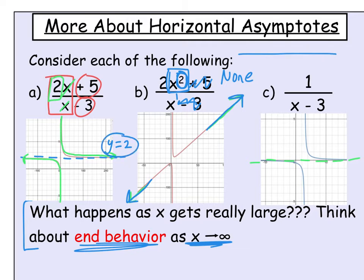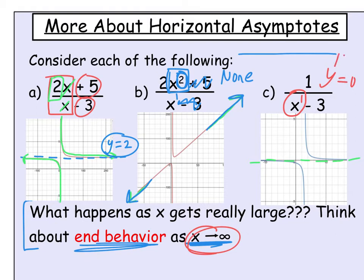In example C, the denominator has x to the first power while the numerator has no x term, so the denominator is the larger of the two. When the denominator just keeps growing bigger and bigger, the entire fraction approaches zero. So in this case the horizontal asymptote is at y equals zero.